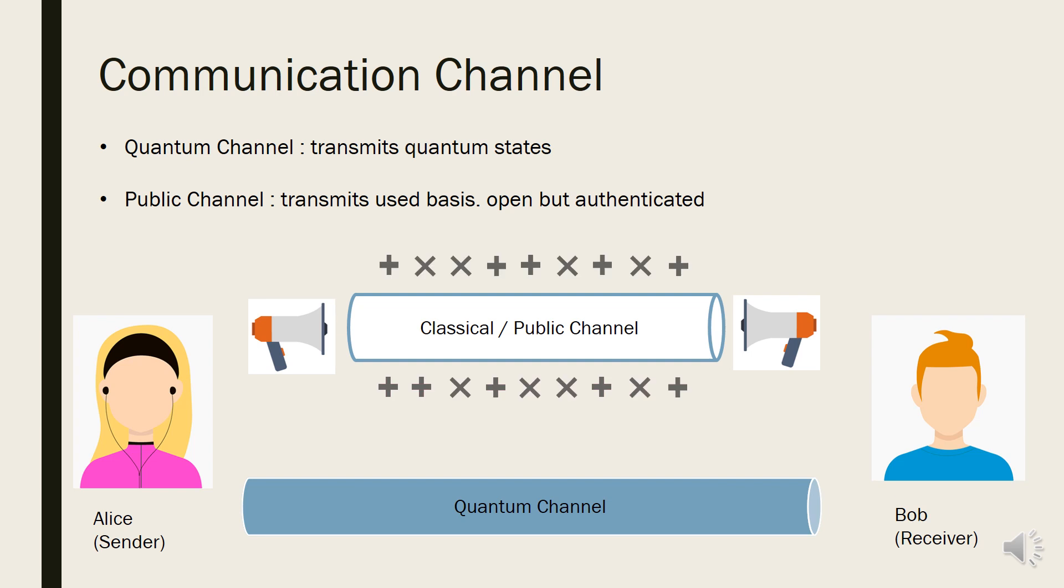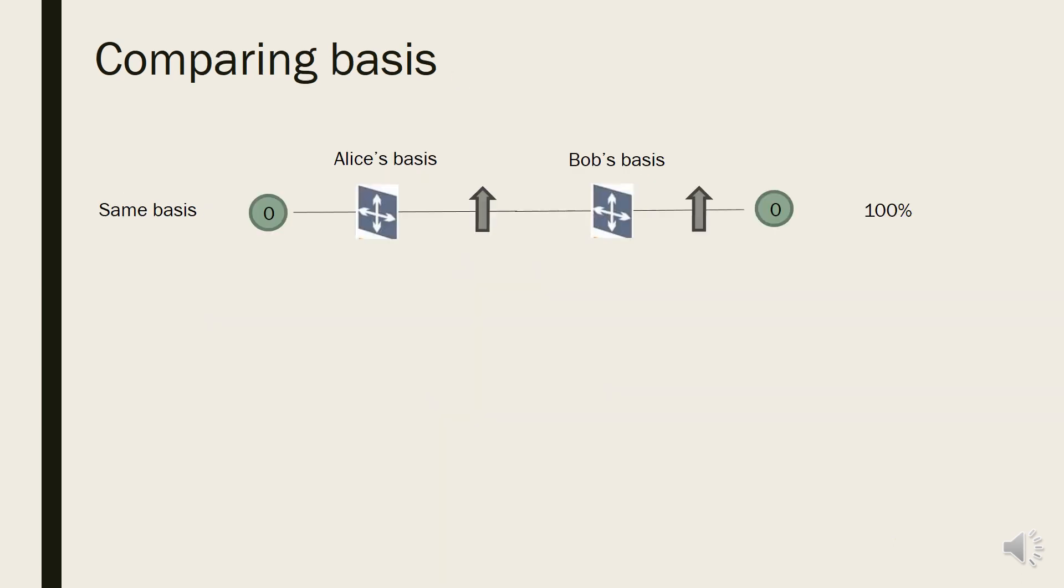Alice and Bob can compare their bases with each other through this public channel. Under the assumption that there is no eavesdropping and no environmental error, if Alice and Bob use the same bases, both of them must have the same bits or 100%.